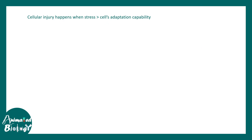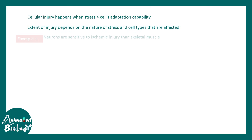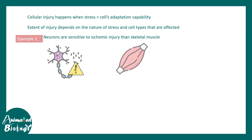Cell injury often happens due to stress when it exceeds the capability of adaptation. The extent of injury depends on the nature of the stress. For example, neurons are more sensitive to ischemic injuries than skeletal muscle, which tells us there is cell-type specific susceptibility towards a given stress.